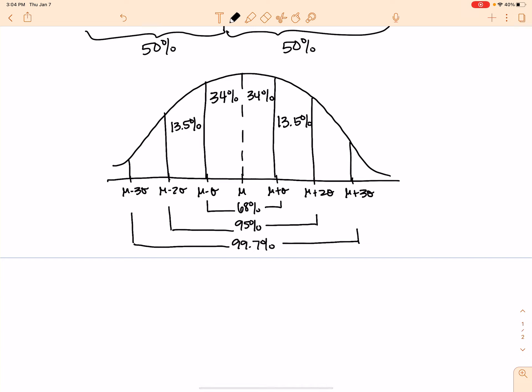And then these little spaces would be 2.35%. Because that's 99.7% total, that whole picture there. All of this right here would be 99.7%. So if I break that down into half, it's just a dividing by two and a subtraction game to figure out what all those little pieces would be.